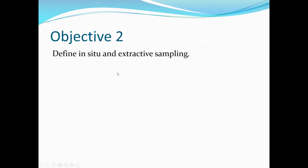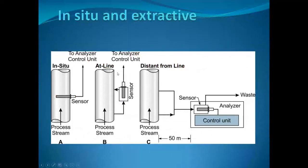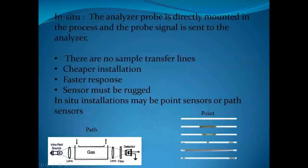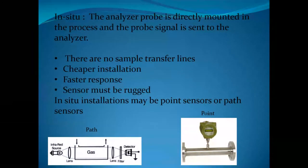For in-situ or in-line sampling, the sensor is in the process itself. For extractive sampling, the sample is pulled out and sent to a nearby sensor in a fast loop style, or transported some distance to a remote sensor. The two extractive types are considered at-line and distance-from-line respectively.